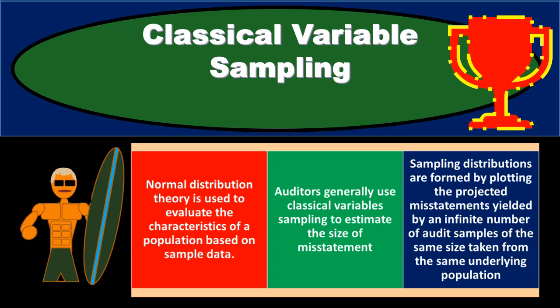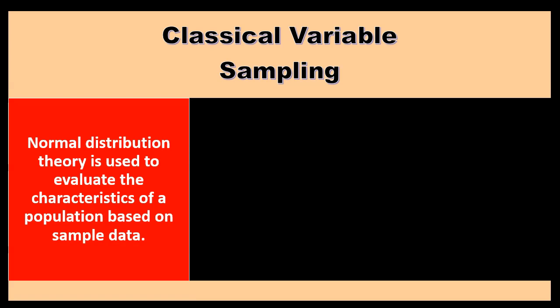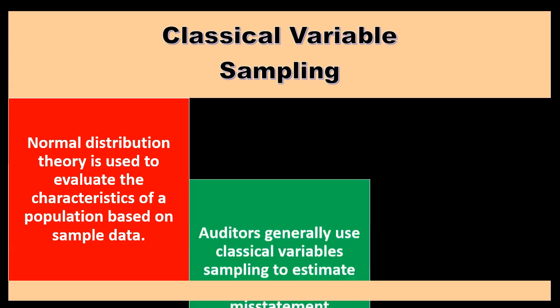In this presentation, we will take a look at classical variable sampling. Within classical variable sampling, normal distribution theory is used to evaluate the characteristics of a population based on sample data.